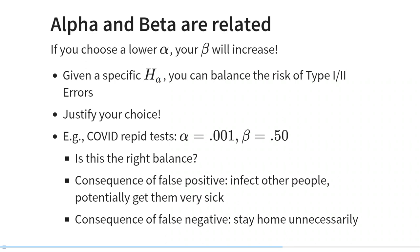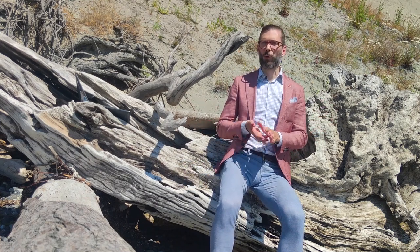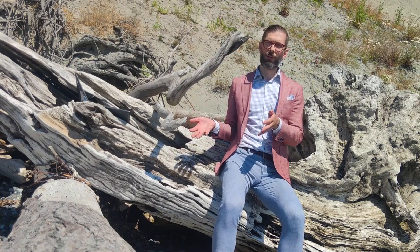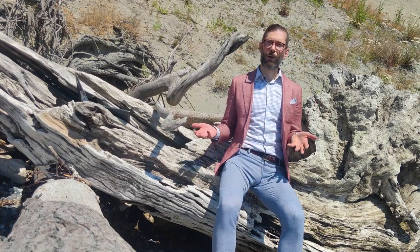Let's look at the rapid COVID tests as an example. The probability of drawing a false positive conclusion is extremely small: 0.001. But the probability of drawing a false negative — concluding that you don't have COVID even though you do — is quite high: 0.5. So 50% of the time you will draw a false negative conclusion. Is this the correct balance between alpha and beta? The consequence of a false negative is that you potentially go out and infect a lot of other people. But the consequence of a false positive is simply that you stay home unnecessarily for a few days.